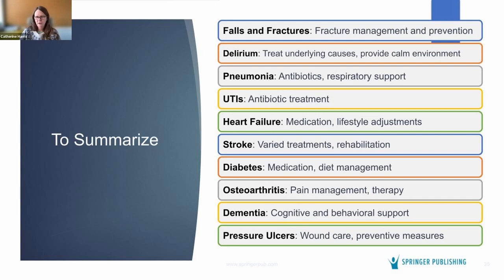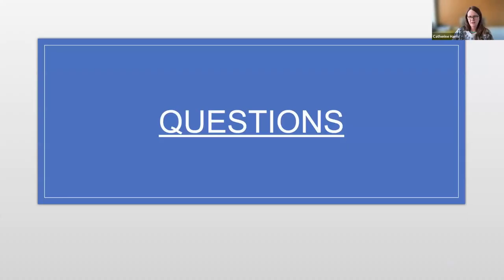So that is our top 10: falls and fractures, delirium, pneumonia, UTI, heart failure, stroke, diabetes, osteoarthritis, dementia, and pressure ulcers. These are the top 10 things that especially if you're new — or even if you're not new — are the areas I would specialize in and really get to know inside and out. Become an expert in one or all of them. You could take one and spend the rest of your career just tackling that problem.